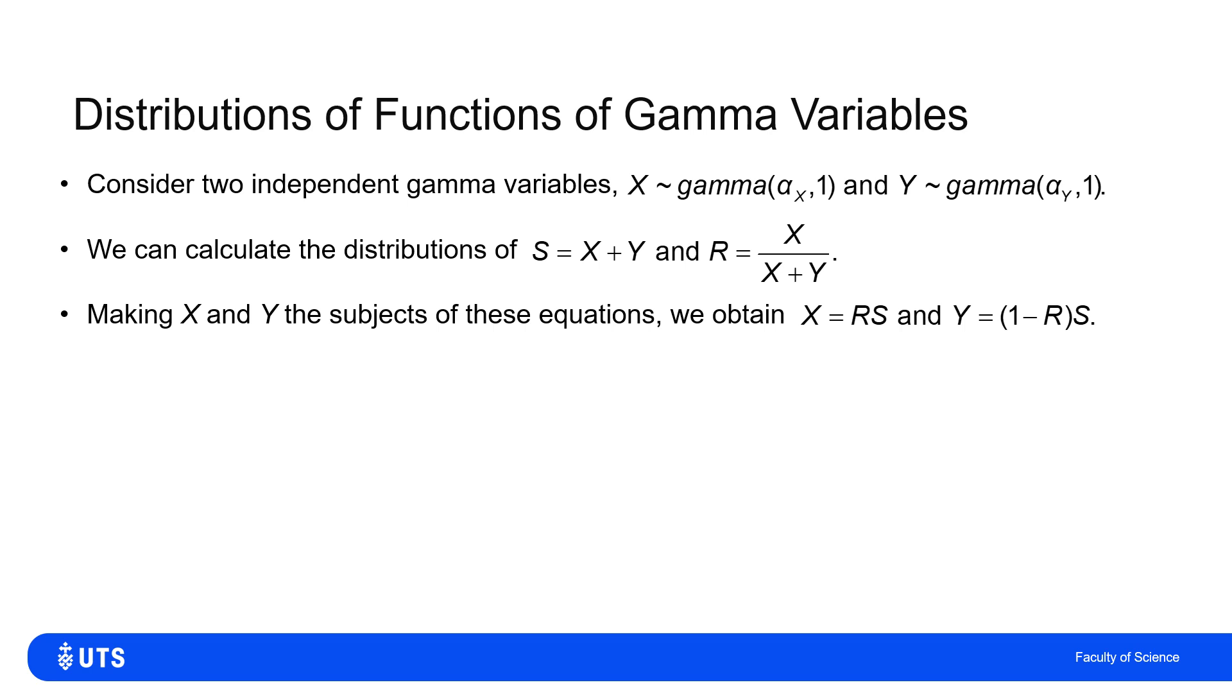So the easy one to figure out is that X is equal to R times S, because X plus Y times X over X plus Y is RS. And then Y is 1 minus R times S.